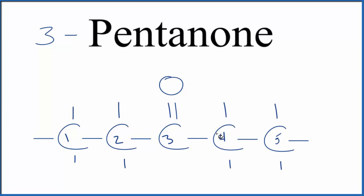You might want to move it over to the four. But what happens is when we move it to the four, that means we'd start numbering here, one, two, three, four, five, to have the lowest number. So it really would just be one, two pentanone as opposed to four pentanone.